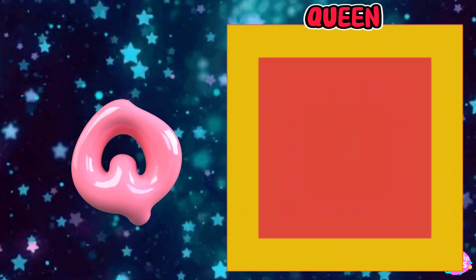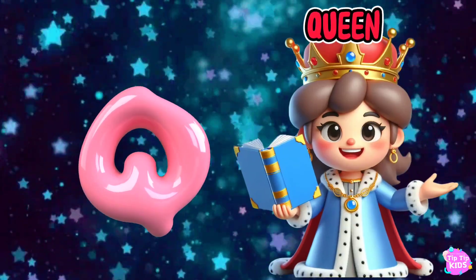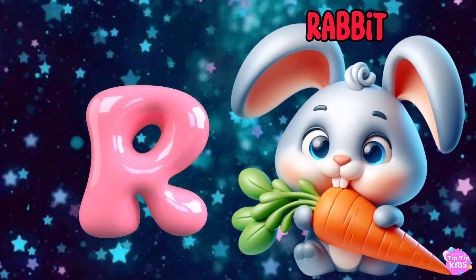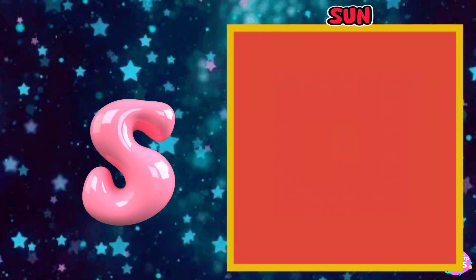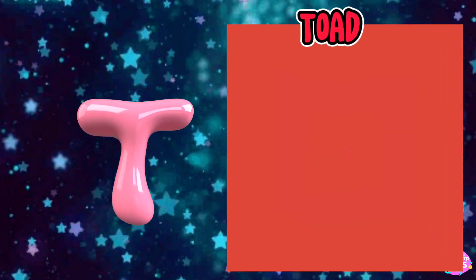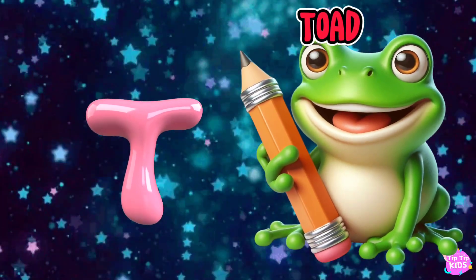Q is for Queen, Q-Q-Queen. R is for Rabbit, R-R-Rabbit. S is for Sun, S-S-Sun. T is for Toad, T-T-Toad.